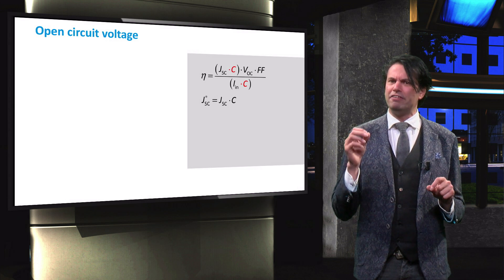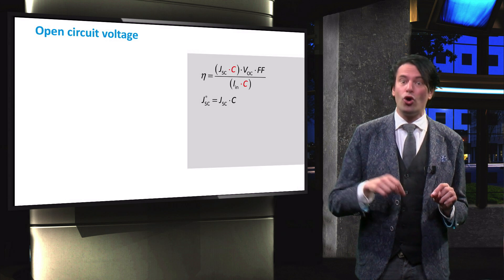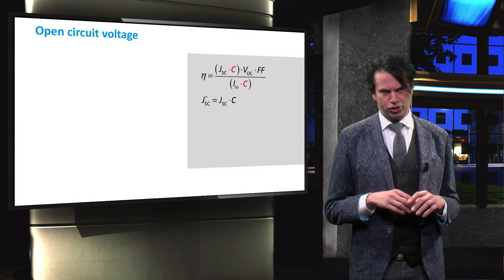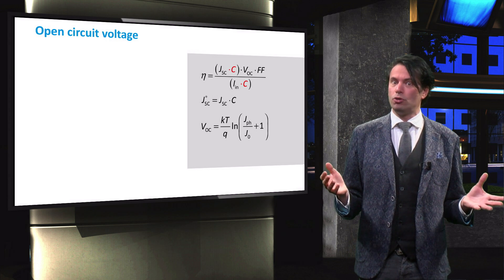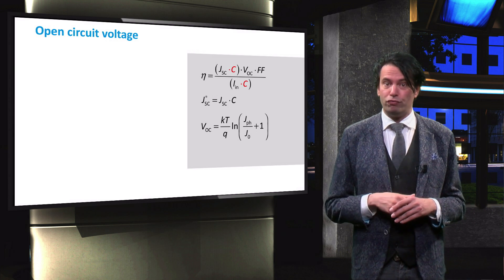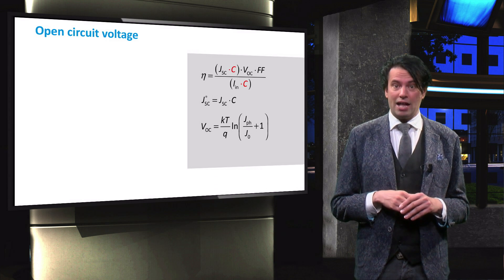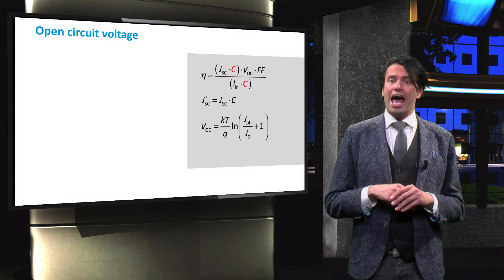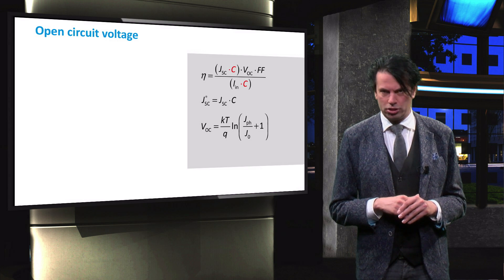So we have to look at the effect of the light concentration on the open circuit voltage. This equation shows how the open circuit voltage depends on the photocurrent density J-photon and the recombination current J-naught.